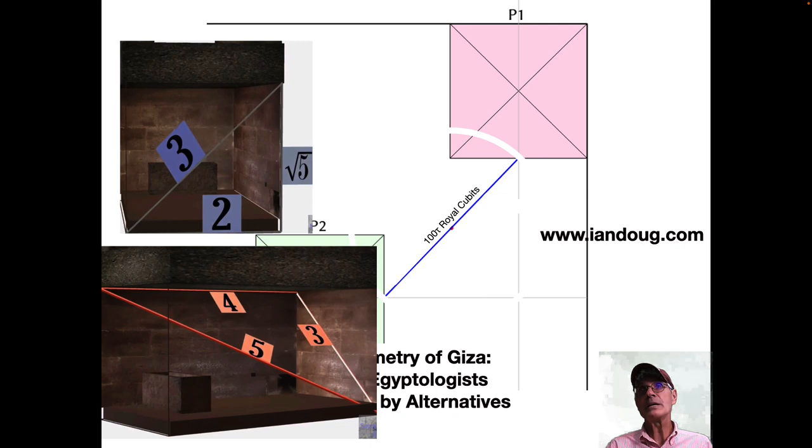And I'll give you an example of what Ian does. So here's the King's Chamber and some of the famous geometric parts of it there, the 3, 4, 5 Pythagorean Triangle in the King's Chamber.